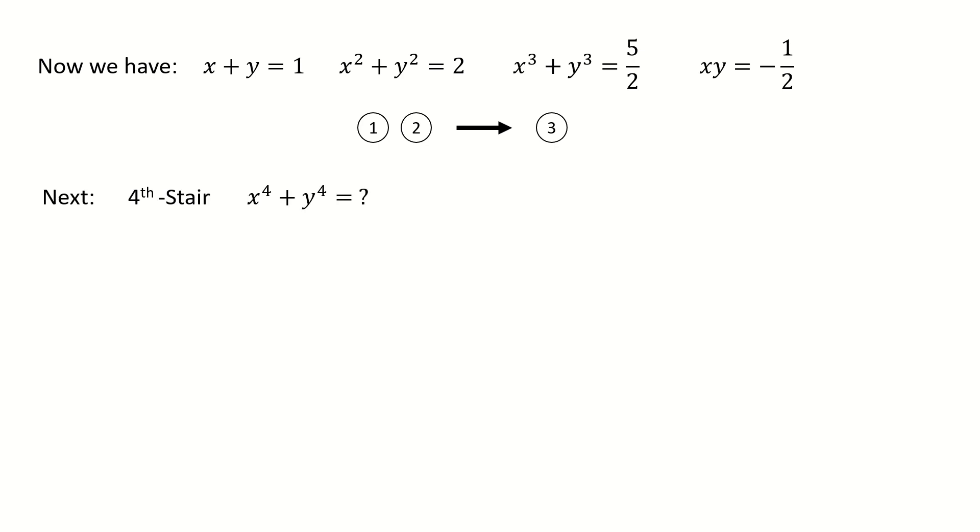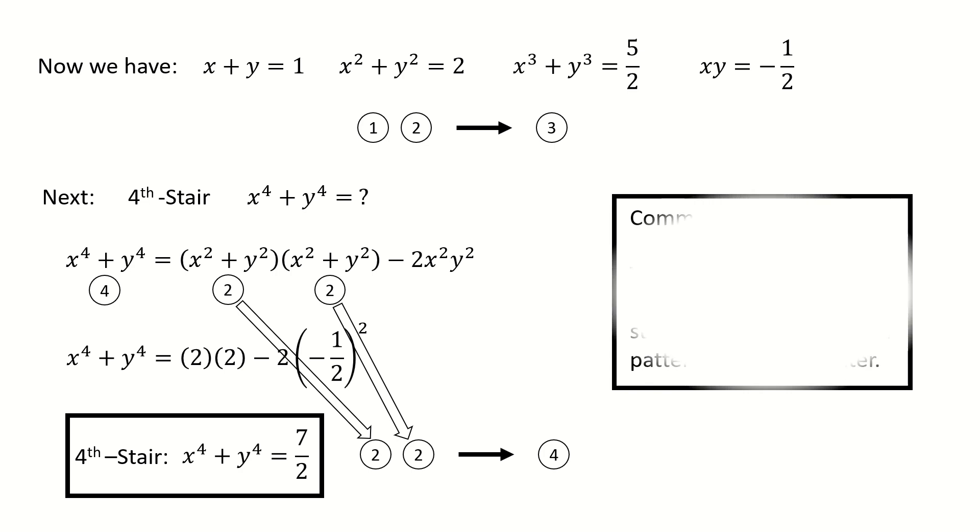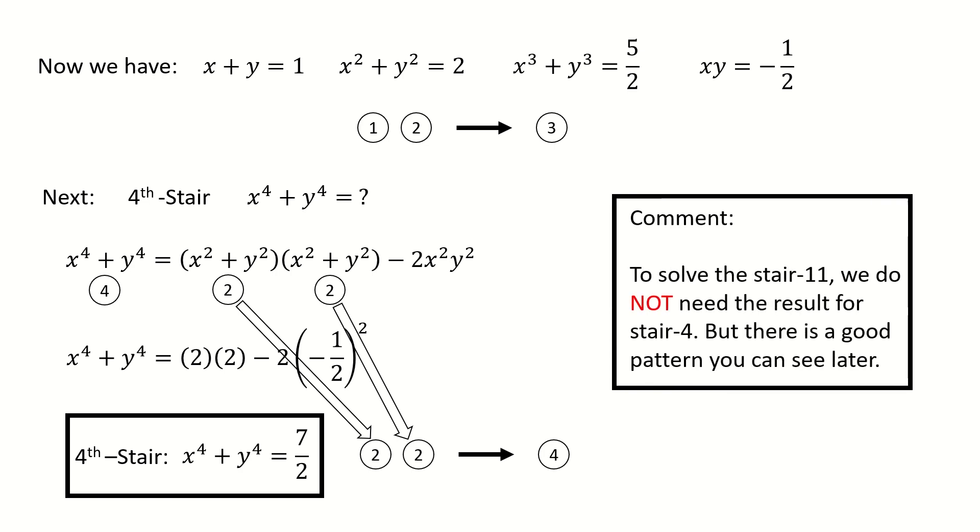Next, let's look at stair 4. By introducing the oval notation, we break down oval 4 to the product of oval 2 multiplied by itself, subtracted by the cross terms. Plugging numbers, we got stair 4. In oval notation, we have oval 2 and oval 2 generate oval 4. Oval 2 appears twice here since we break down into the product of oval 2 multiplied by oval 2. Here I put a comment: to solve stair 11, we don't need the result for stair 4, but there's a good pattern you can see later.